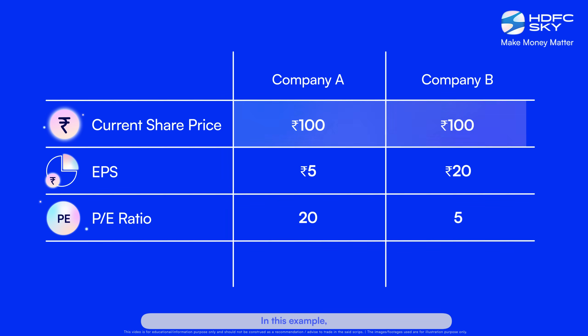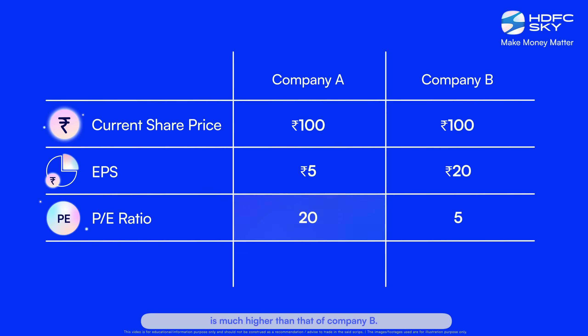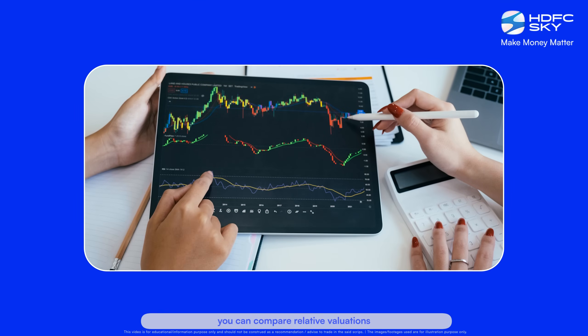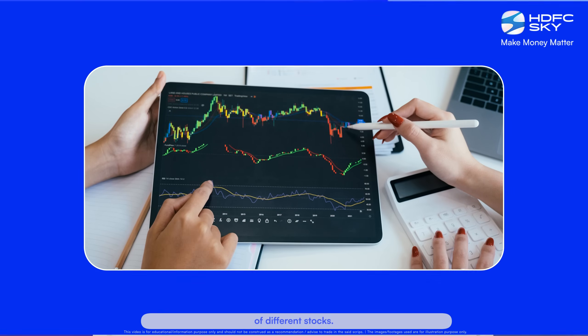In this example, both companies are trading at the same price — 100 rupees per share — but the PE ratio of company A is much higher than that of company B. This means that the stock of company A is relatively more expensive than the stock of company B. In this way, by comparing PE ratios of stocks, you can compare relative valuations of different stocks.